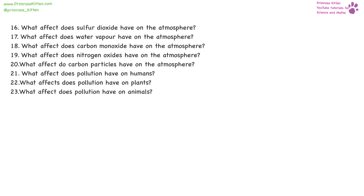What effect does sulfur dioxide have on the atmosphere? That is going to lead to acid rain. Water vapor and carbon monoxide are both greenhouse gases, so they're going to trap radiation. Nitrogen oxides are also greenhouse gases, but they are very efficient — much better at trapping heat than carbon dioxide.